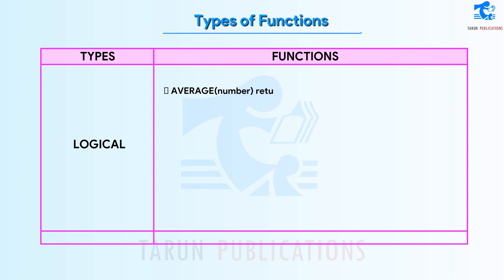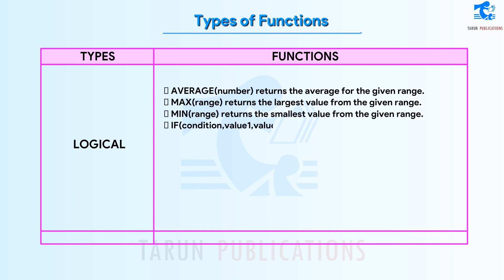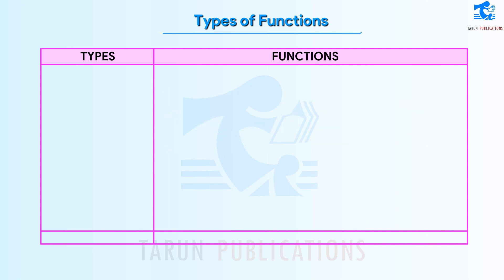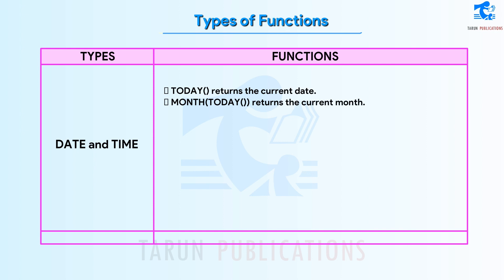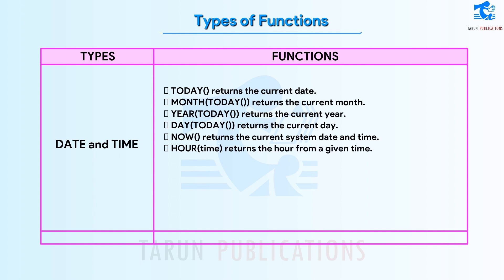Logical and Statistical Functions: AVERAGE(Range) returns the average for the given range; MAX(Range) returns the largest value from the given range; MIN(Range) returns the smallest value from the given range; IF(Condition, Value1, Value2) — the IF statement can have two results: the first result is if your comparison is true, and the second result is if your comparison is false. Date and Time Functions: TODAY() returns the current date; MONTH(TODAY()) returns the current month; YEAR(TODAY()) returns the current year; DAY(TODAY()) returns the current day; NOW() returns the current system date and time; HOUR(Time) returns the hour from a given time; MINUTE(Time) returns the minutes from the given time.